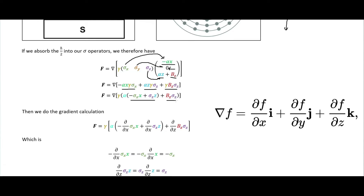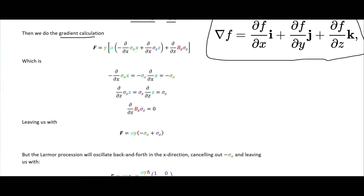After factoring, we have one expression for x and z involving the Pauli matrices and another for the magnetic field terms. The gradient calculation takes the partial derivative with respect to x and the partial with respect to z. The partial of x with respect to x is one, so that term stays. The partial of z with respect to z is one, so that stays too. There is no z in the x-term, so that part goes to zero.